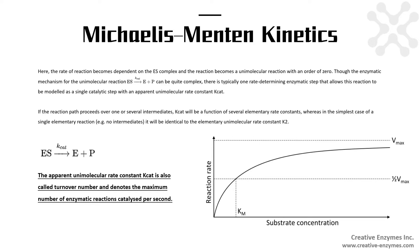Though the enzymatic mechanism for the unimolecular reaction can be quite complex, there is typically one rate-determining enzymatic step that allows this reaction to be modeled as a single catalytic step with an apparent unimolecular rate constant kcat. The apparent unimolecular rate constant kcat is also called turnover number and denotes the maximum number of enzymatic reactions catalyzed per second.